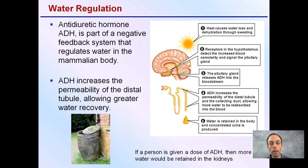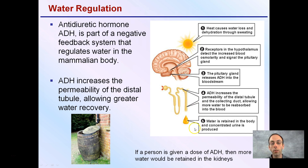When ADH is released into the bloodstream, that will cause an increase in the permeability of the distal tubule and the nephron in the collecting duct. This allows more water to be reabsorbed into the blood. This is our nephron structure, and water will be retained in the body.